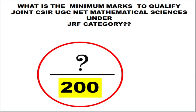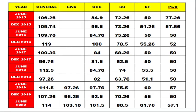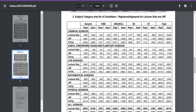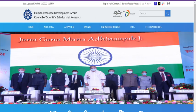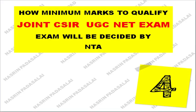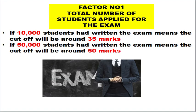I have made a detailed analysis of what is the minimum mark to qualify the CSIR UGC NET examination under Mathematical Sciences, specifically under the JRF category. I will also update you on the minimum mark for the Lectureship category in upcoming videos — the link will be in the description below. Before discussing the minimum mark, let me clarify how this minimum mark is decided by NTA. Previously, CSIR HRDG was involved in conducting this examination, but from June 2019 onwards, NTA took responsibility and conducts it in CBT mode.